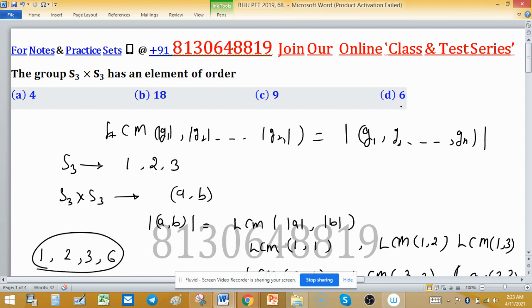LCM of an element which is in direct product of S₃ cross S₃ will never be 18, 9, or other values. So option D is correct. Select.